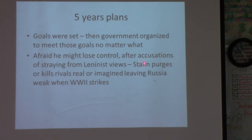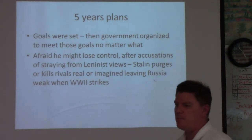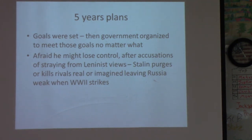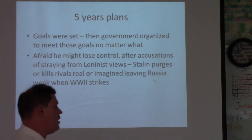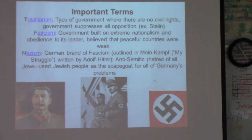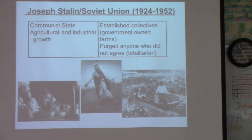Afraid he was going to lose control, Stalin underwent a purge, killing off all of his rivals, perceived rivals, even his own supporters and most of his generals. The problem was this ended right at the beginning of World War II. So when Germany attacked Russia in Operation Barbarossa, the Russians were used up trying to slow them down because they had no good leadership.